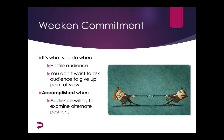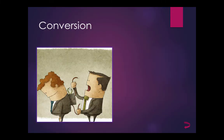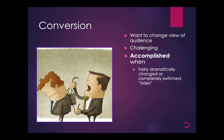The third persuasive purpose is conversion. Conversion involves changing the audience's beliefs either by getting them to accept something they have already rejected, or to reject something they have previously accepted. This is really, really tough to achieve. Even if you accomplish it, it's unlikely you'll accomplish it in one speech or one sitting. You know you have achieved this when the audience has fairly dramatically changed or completely switched sides — it'll be a huge deal when it happens.